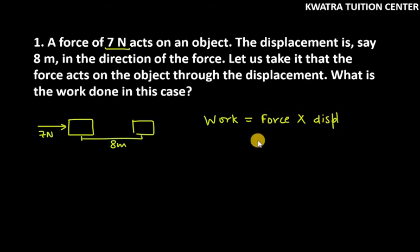That's very simple formula. So force here is 7 newton and displacement here is 8 meter. So you get 7 into 8. 7 into 8 is 56.